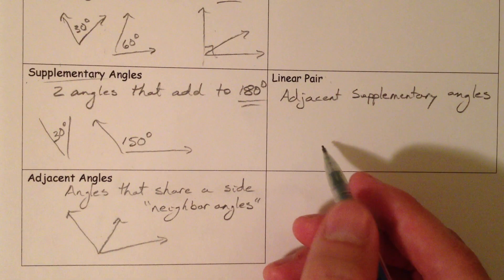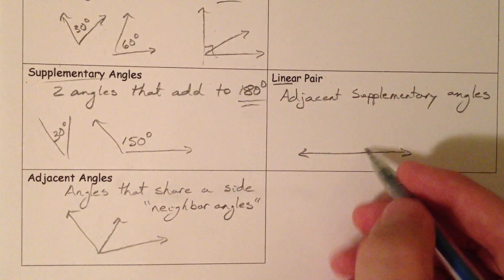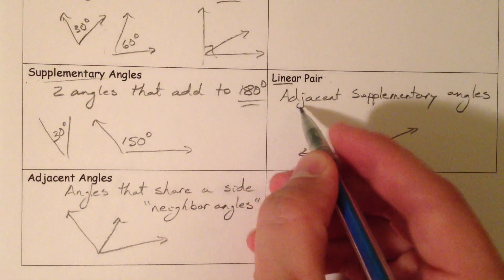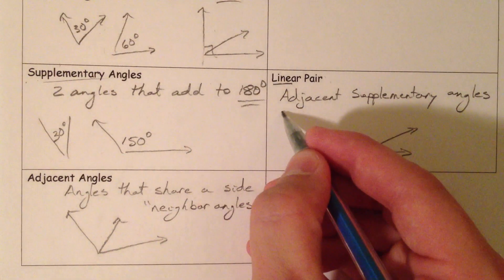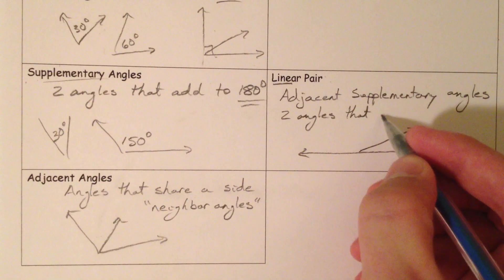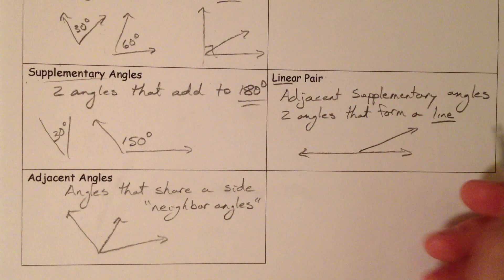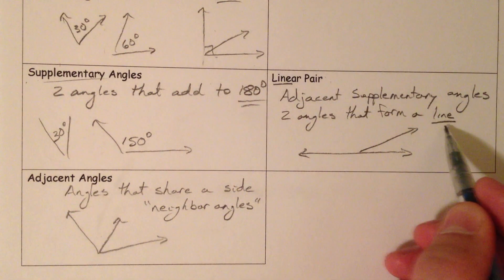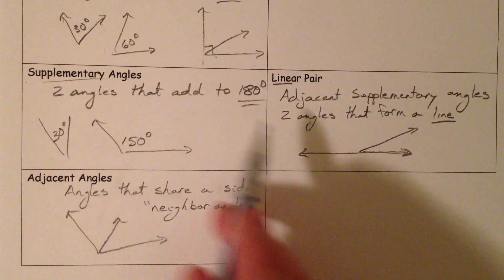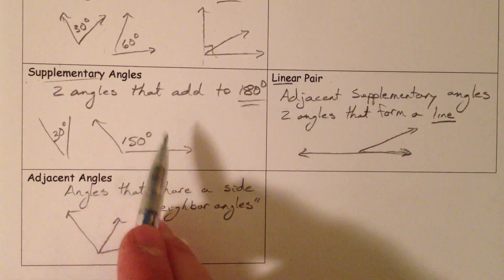They form a straight line. And so a linear pair, emphasis on line, they form a line, so you have two angles that form a line. So this is the geometric way of saying it, two angles that form a line. So when you see linear pair, see that root word line in linear. And they know that a linear pair is also a supplementary angle. But supplementary angles are not always linear pairs because they may not be touching.